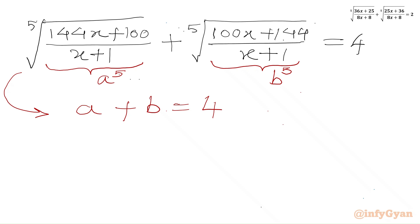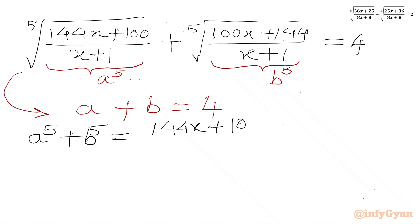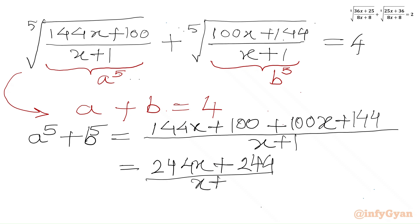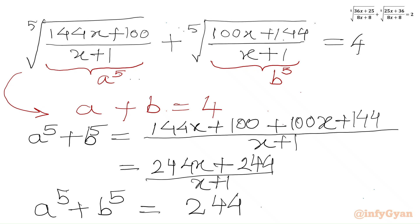Now I will add A to the power 5 with B to the power 5. A^5 plus B^5 equals 144x plus 100 plus 100x plus 144 over x plus 1. This simplifies to 244x plus 244 over x plus 1, which gives us 244. So A^5 plus B^5 equals 244. This is our equation number 2.